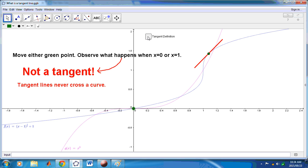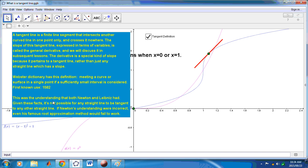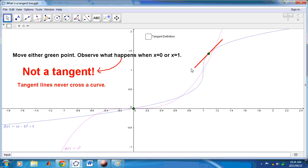So, what is the definition of a tangent? Let's quickly see. We read through it in the previous screen, but really, it's meeting a curve or a surface in a single point if a sufficiently small interval is considered. So if you look at that there, it's this small interval here that we're considering.